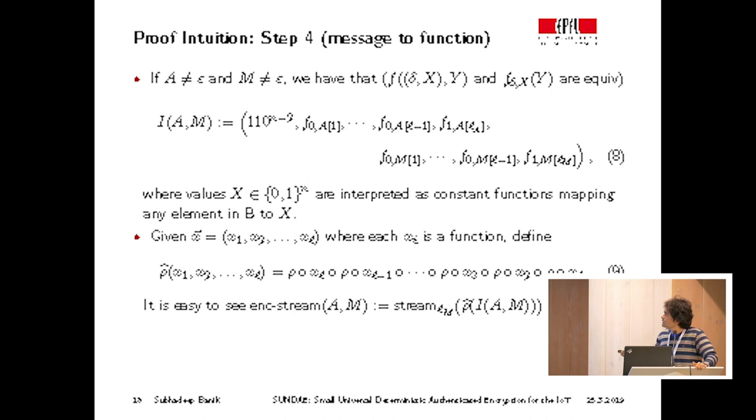And so you can see that every transcript can be written as a sequence of functions. For example, if associated data and the message are both non-empty, then we can convert this transcript into a sequence of functions given by I(a,m), which starts with initial IV and lists the set of functions one by one. And any constant values in the sequence should be simply interpreted as a constant function. So given this set of functions x1 to xl, we can then define the sequence rho_hat of x, which ultimately applies the uniform random function rho to elements of the sequence. And it is not very difficult to see that the Sundae algorithm, the encryption of the Sundae algorithm, is essentially the stream_hat algorithm applied on rho_hat of I(a,m).